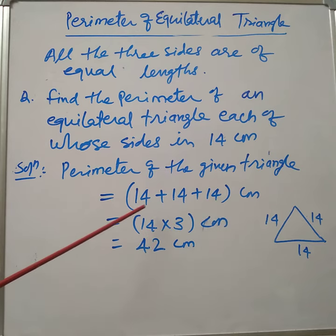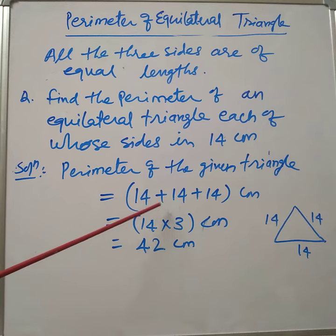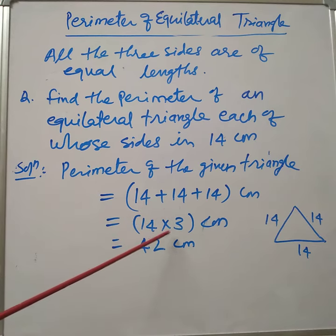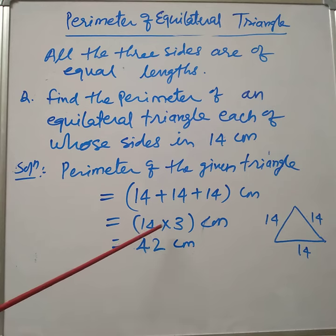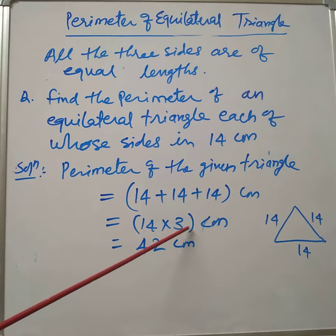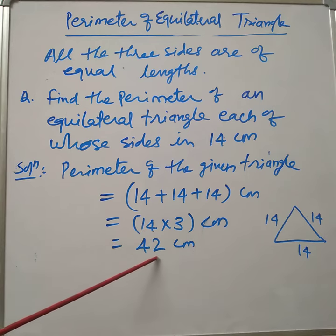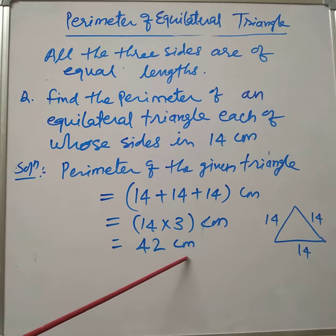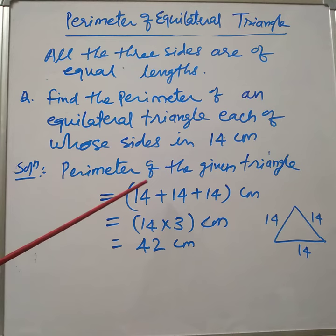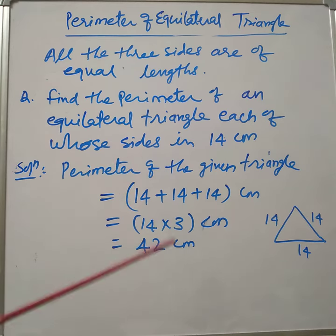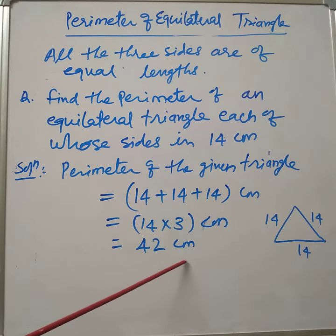So, 14 comes 3 times. We write 14 multiplied by 3. So, 14 multiplied by 3 is equal to 42 cm. Therefore, the perimeter of the equilateral triangle is equal to 42 cm.